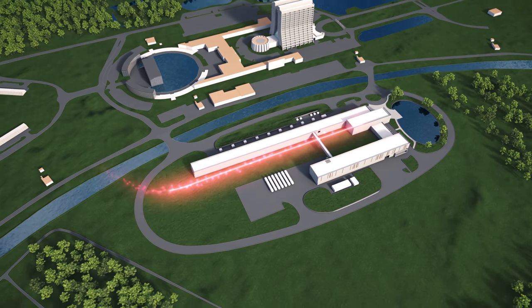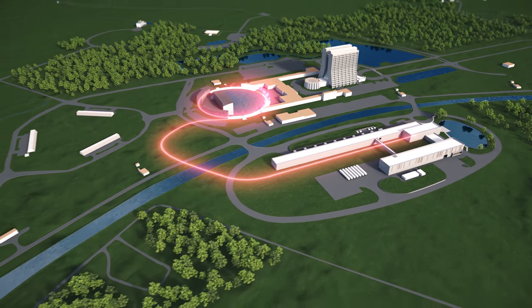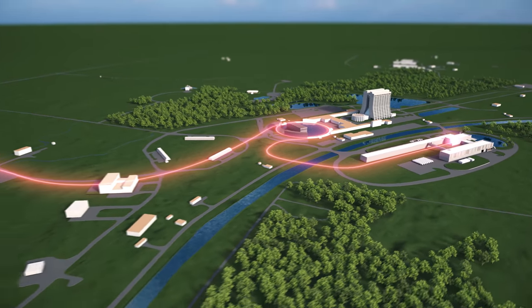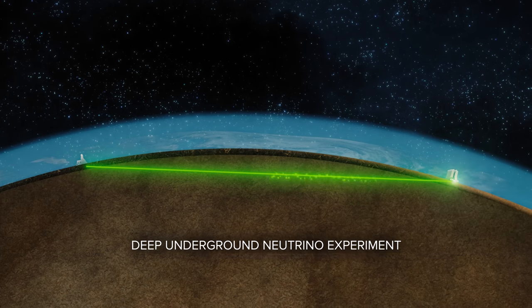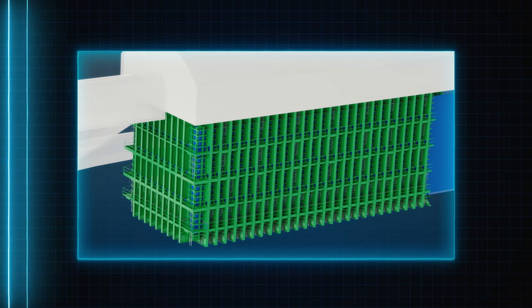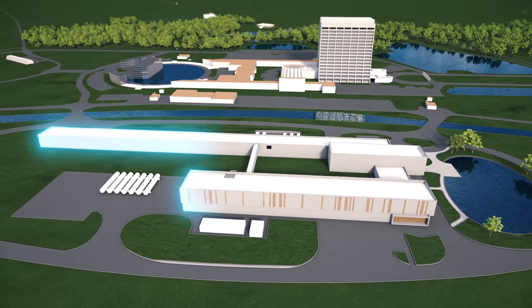When operational, PIP2 will be the new heart of Fermilab. It will provide substantially more particles for Fermilab's accelerator complex. The new megawatt proton beam will power the world's most intense neutrino beam for the International Deep Underground Neutrino Experiment and drive Fermilab's research program for decades to come.